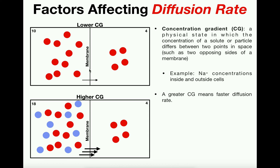A concentration gradient is a physical state in which the concentration of a solute or particle differs between two points in space — normally opposing sides of a membrane, such as inside versus outside a cell. When there's a different amount of particles on each side of the membrane, that implies a different concentration, and therefore we have a concentration gradient. With 10 particles on the left and 4 on the right, net diffusion goes from left to right.